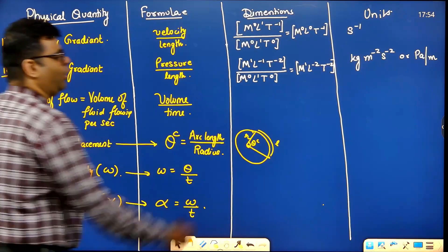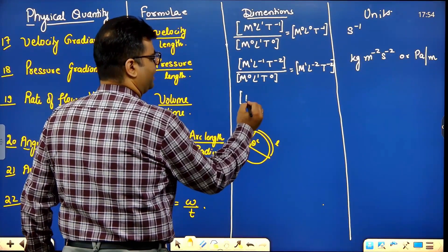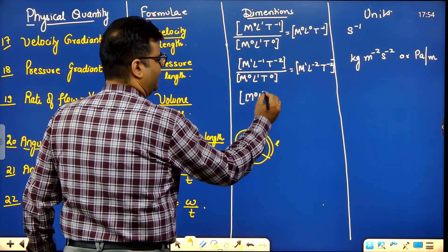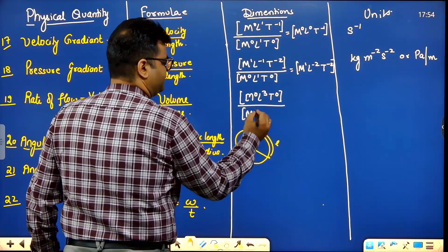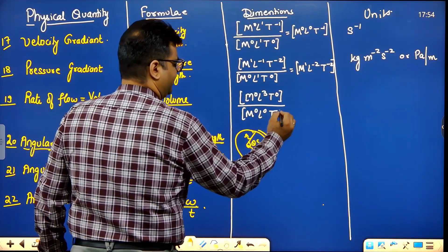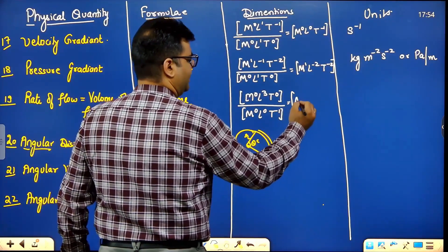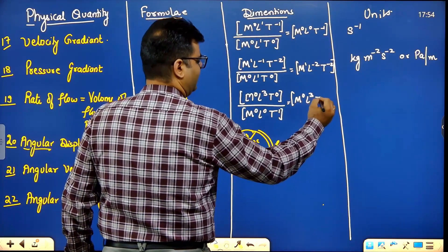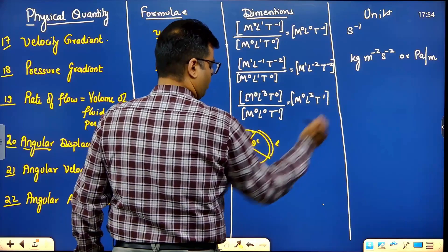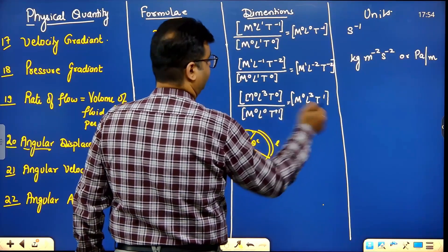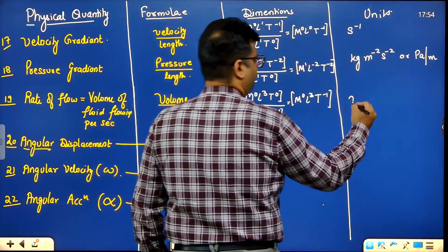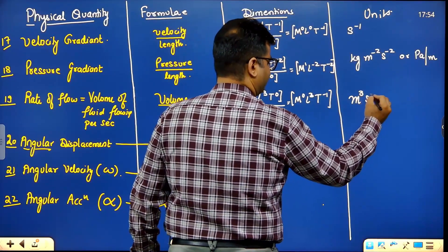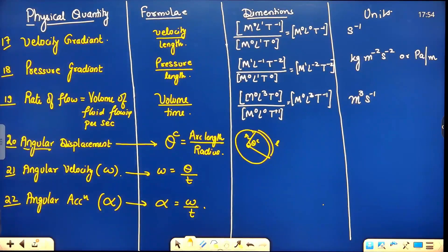Rate of flow is volume upon time. Volume is M⁰L³T⁰, time gives T⁻¹ in denominator. Combining: M⁰L³T⁻¹. Units are meter cube per second (m³/s).